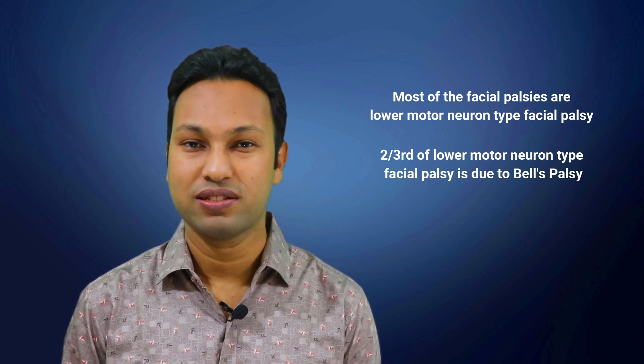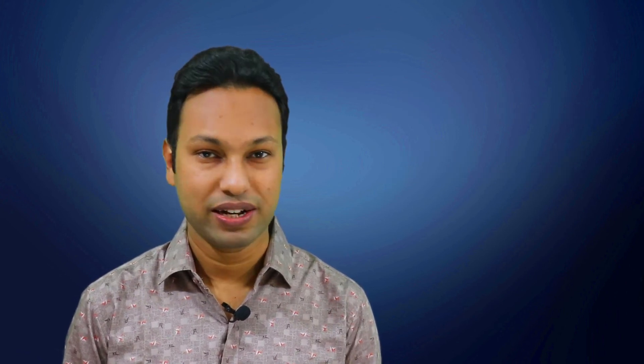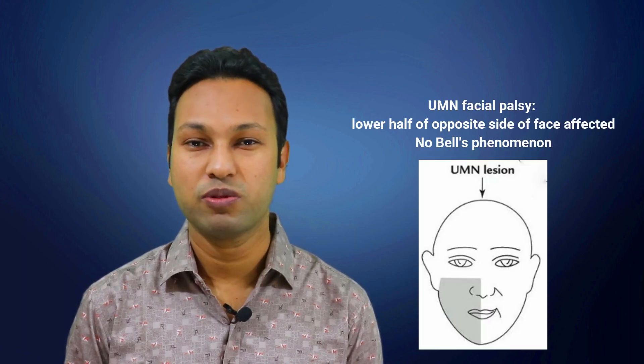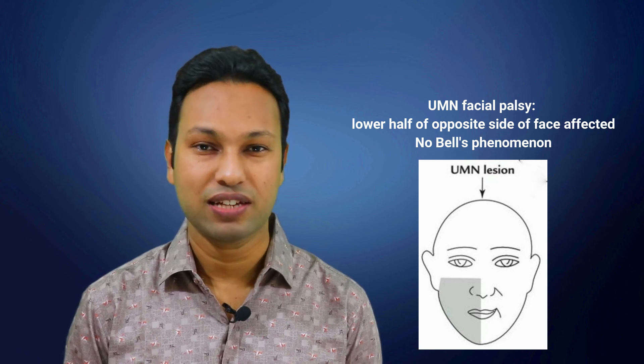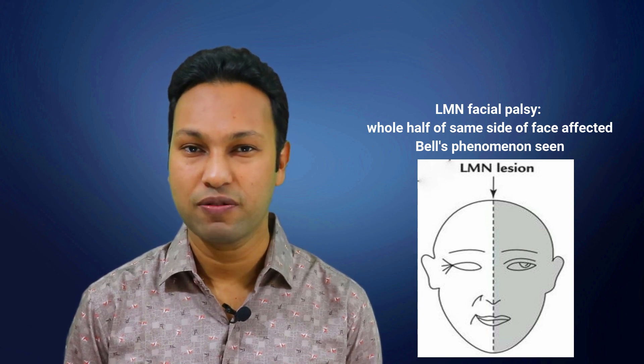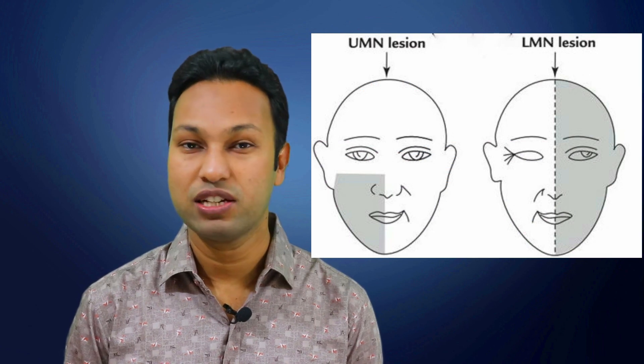In summary: in upper motor neuron type of facial palsy, only the lower half of the face on the opposite side is affected. In lower motor neuron type of facial palsy, both the upper and lower half of the face are affected on the same side. The idiopathic variety of lower motor neuron type of facial palsy is called Bell's palsy. Finally, Bell's phenomenon can also be seen bilaterally in cases of Guillain-Barré syndrome.